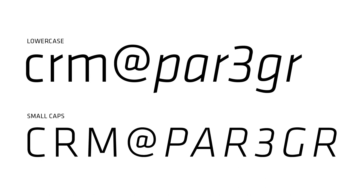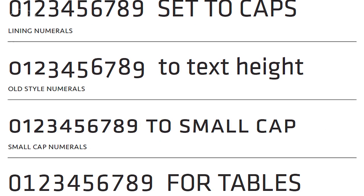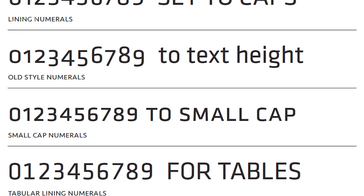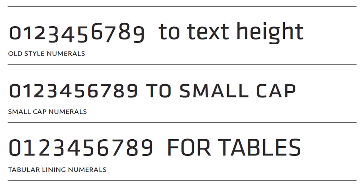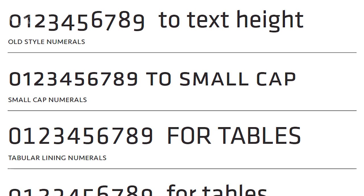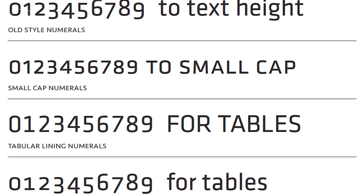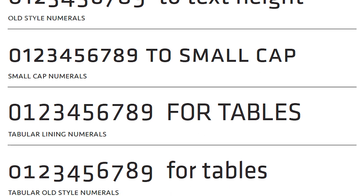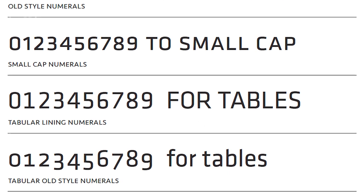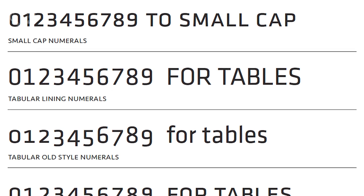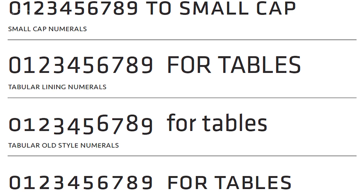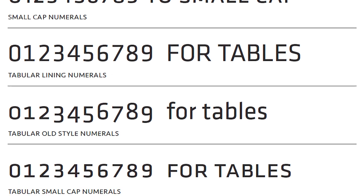Consideration for the width of the capitals enhances legibility at small sizes and adds a punch to headlines. Numerals, an essential aspect of contemporary communication, come in multiple styles, including lining — the default style — old style, small cap, tabular, tabular old style, and small cap tabular numerals for each weight of Klavika, even in italics. These design nuances highlight the importance of meticulous attention to detail for optimal functionality.